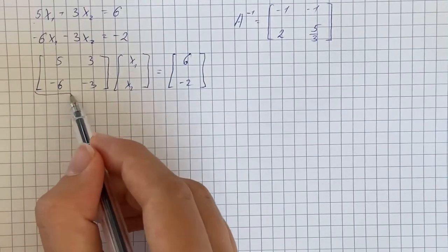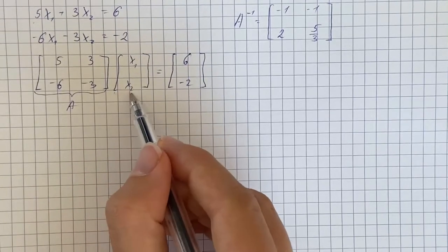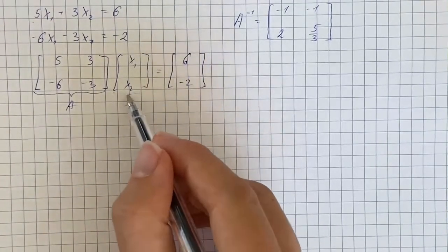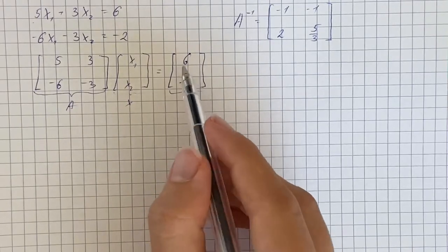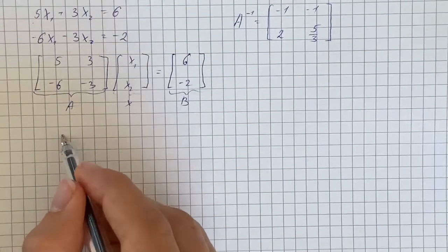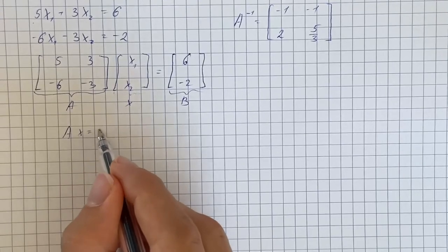So let's call this matrix A, this vector x, and this matrix B. Therefore we get A times x equals B.